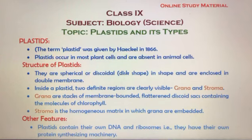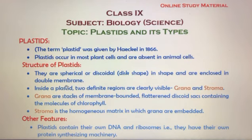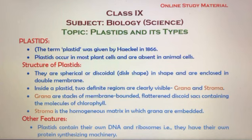Looking at the general structure of Plastids, they are mostly spherical or discoidal in shape. They are enclosed in a double membrane — there is an outer layer and an inner layer, making two distinct membranes surrounding each plastid.